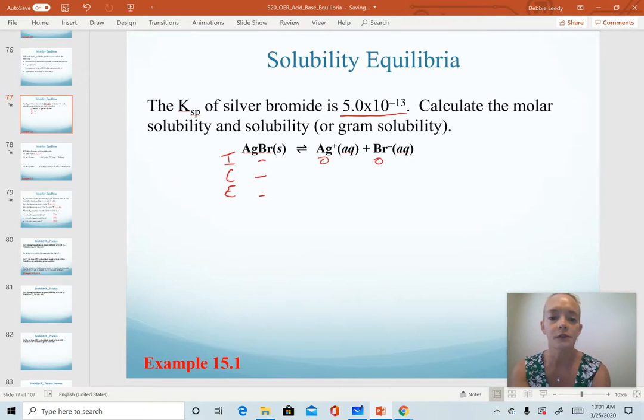Our initial quantities of our products are zero. Because those are zero, our reaction has to go forward. They will change by plus x, just a 1x because of the coefficient of 1, and therefore at equilibrium we have just x.